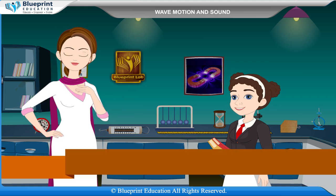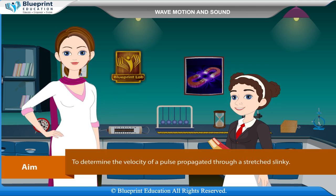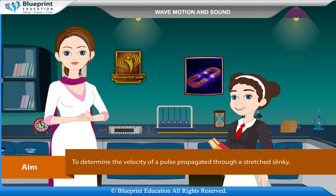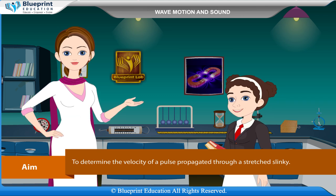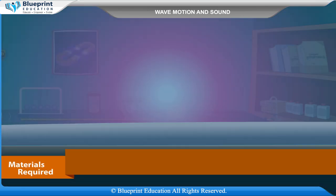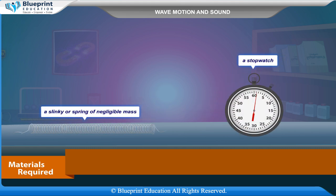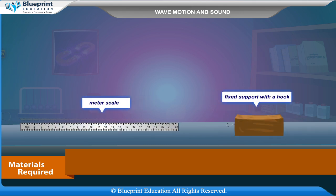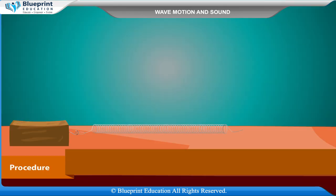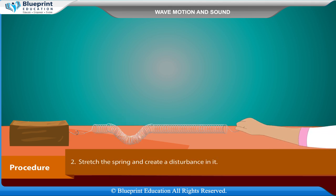Let's do an experiment to determine the velocity of a pulse propagated through a stretched slinky. Our aim is to determine the velocity of a pulse propagated through a stretched slinky. The materials required are: a slinky or spring of negligible mass, a stopwatch, a meter scale, and a fixed support with a hook.